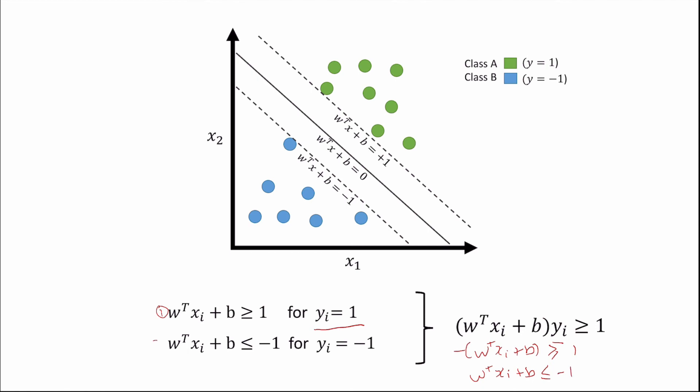which is this inequality here. So for both cases, yi equals to 1 and yi equals to minus 1 can be encaptured in this single inequality here.